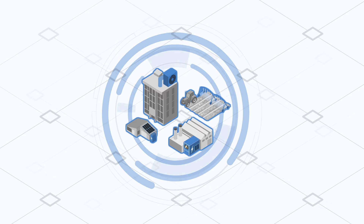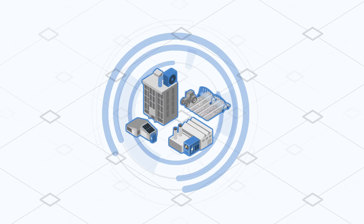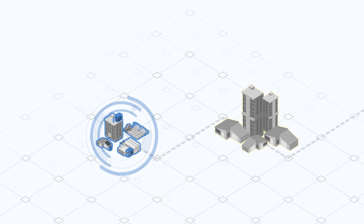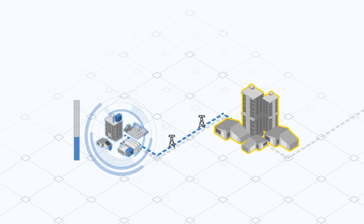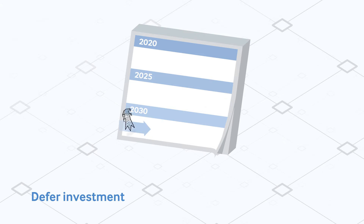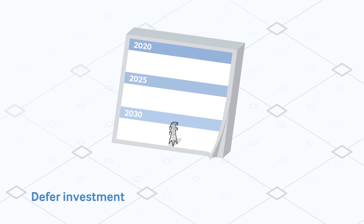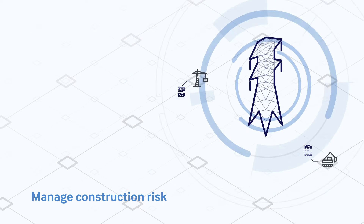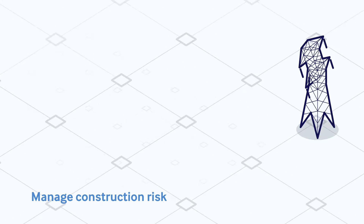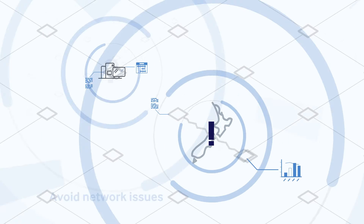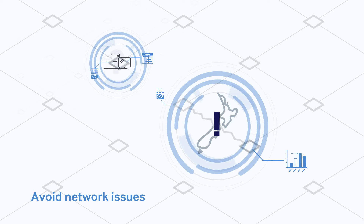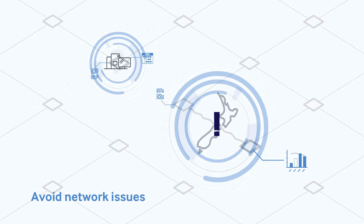Distributed Energy Resources, or DERs, are physical assets connected to the electricity system that can be used to manage energy demand by temporarily changing power usage, like during demand increases. They help to defer investments, such as in a new substation, manage construction risk, manage outage windows for when we need to perform maintenance, and avoid network issues, such as voltage, frequency or overload limits.